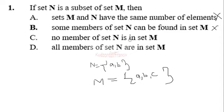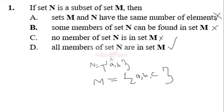Option C: no member of set N is in set M — that is not true because we can see a and b in N are also in M. Option D: all members of set N are in set M — that is true, because a and b are all found in set M. So if N is a subset of M, the correct answer is that all members of set N are in set M.